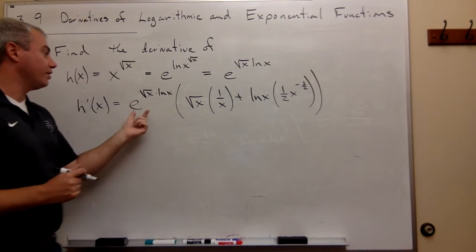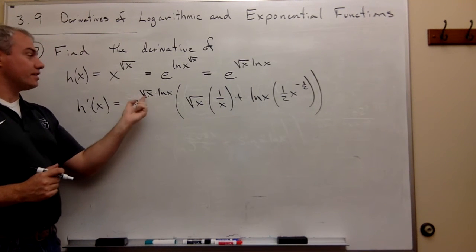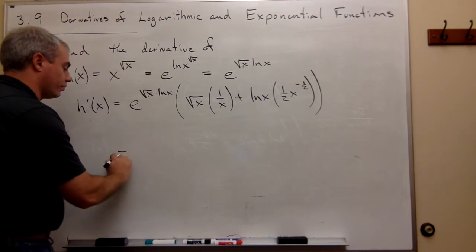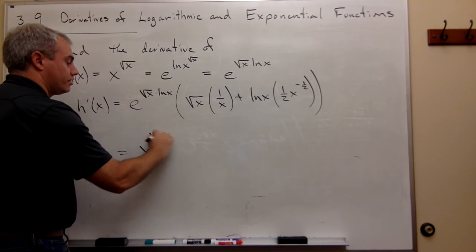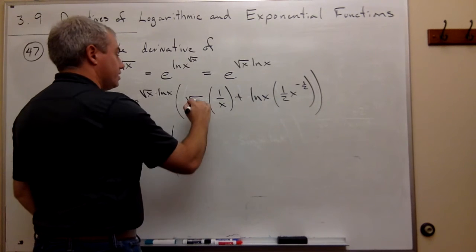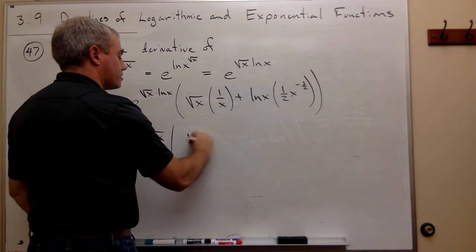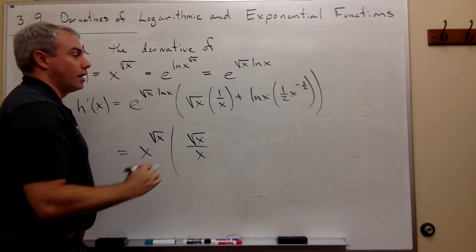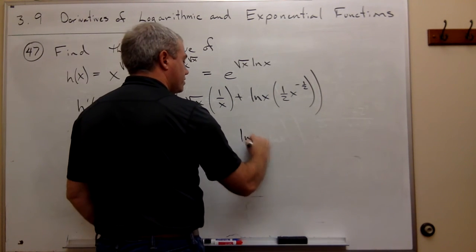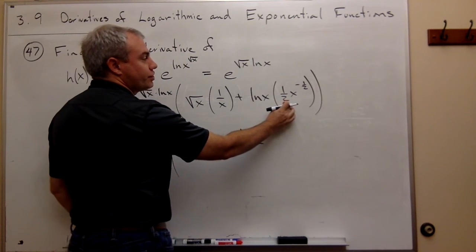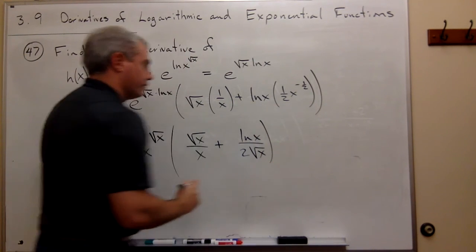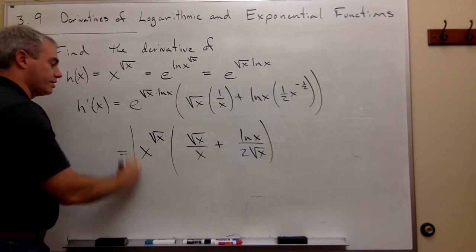Now we can clean this up a little bit. Remember that e to the square root of x ln of x is x to the square root of x. So we can rewrite this as x to the square root of x, times square root of x over x, plus, on top here, we have ln x, and on bottom we have 2, and this is just a square root of x on the bottom. And so this is my derivative.